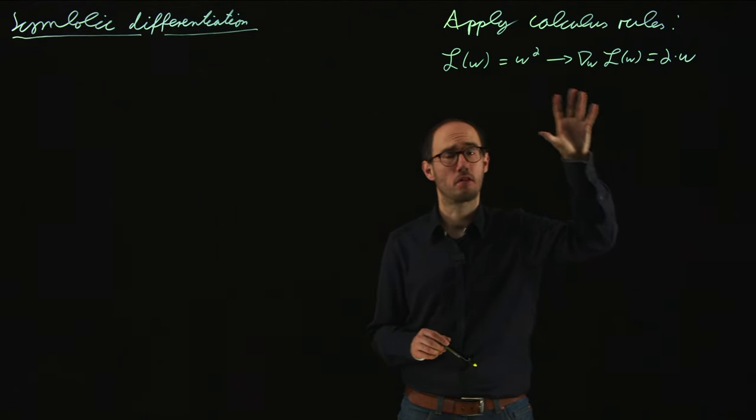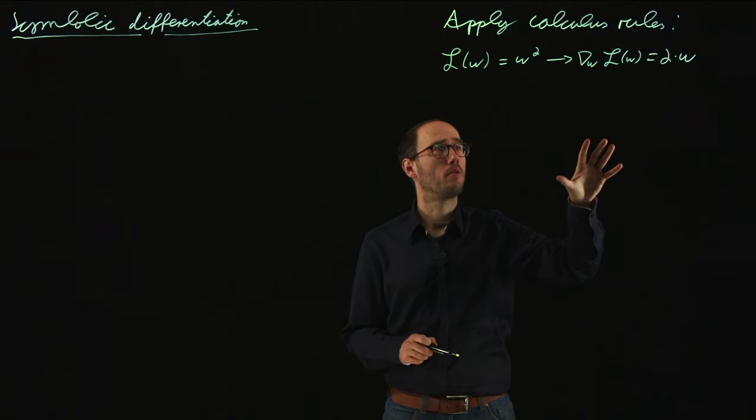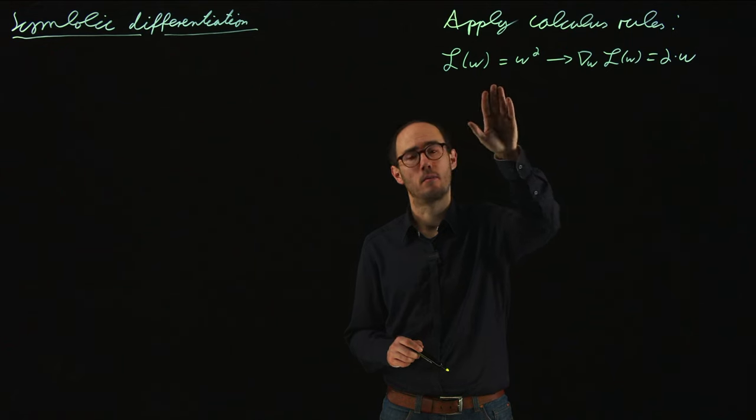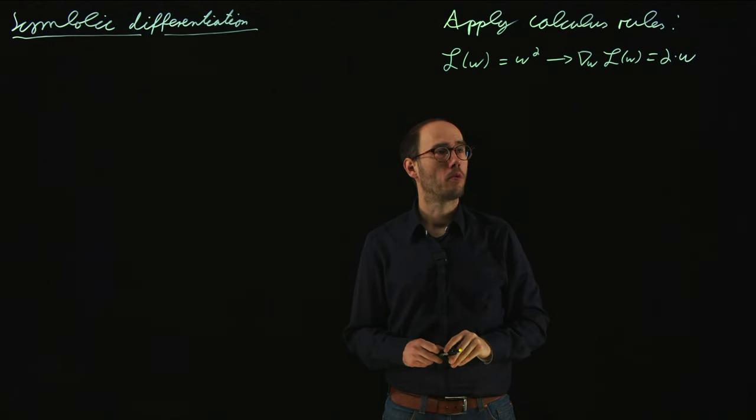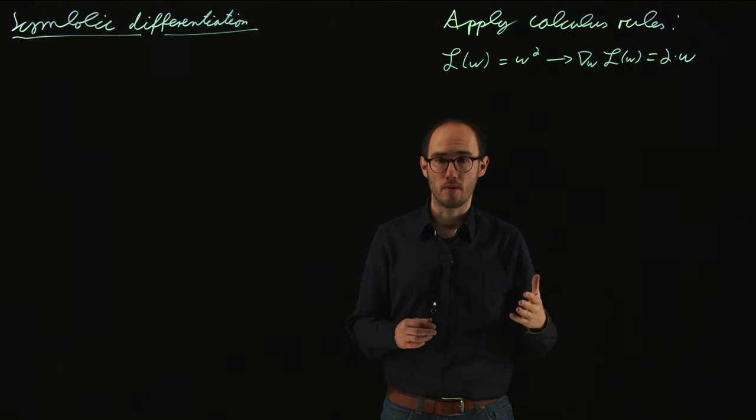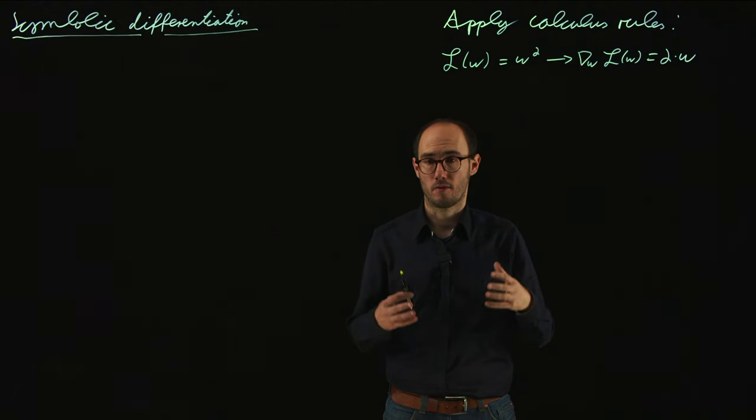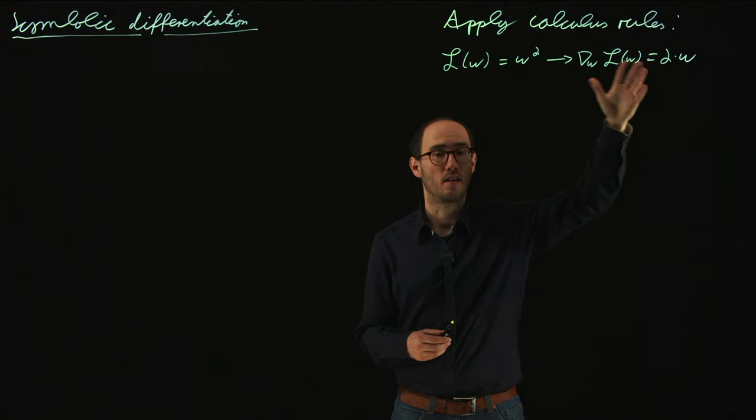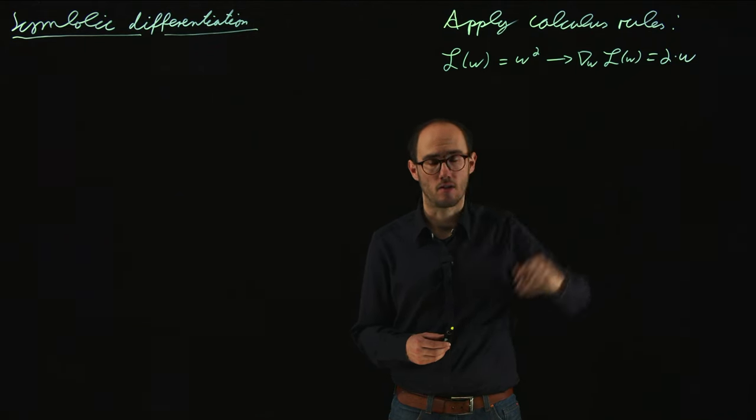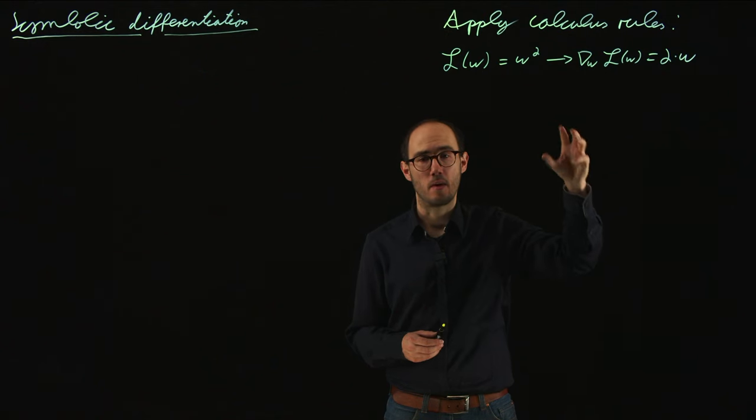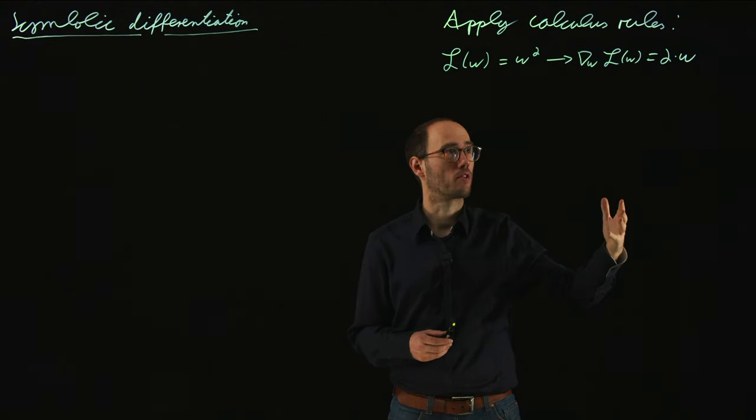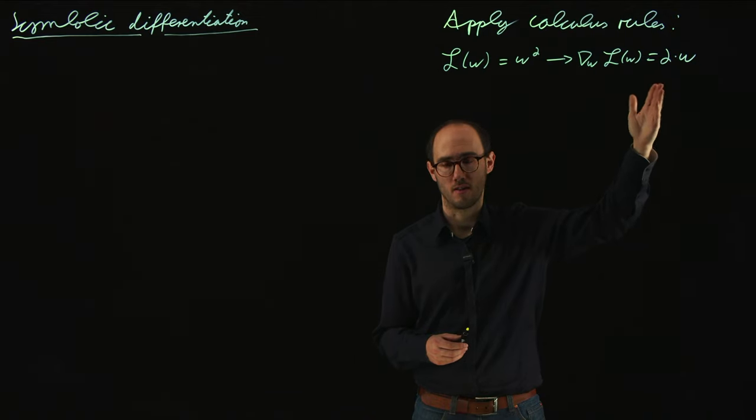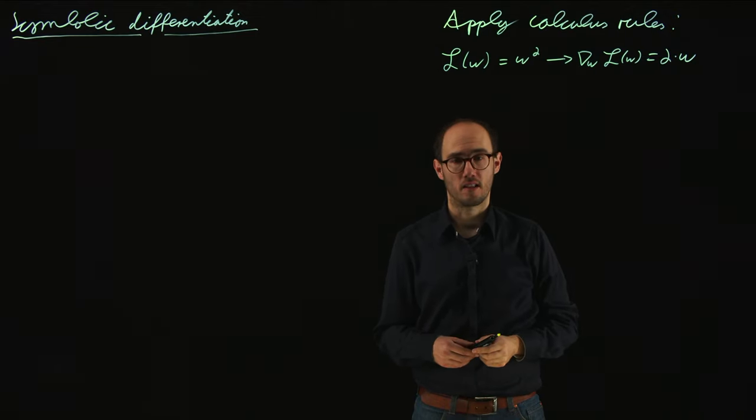To give you just a very simple example what I mean: if we have some optimization cost function like L(w) = w², what we would do is by pen and paper or with computing code, write down the gradient or eventually also the Hessian of the cost function based on the normal calculus rules. So for example, the gradient of L in this case would be of course 2w.